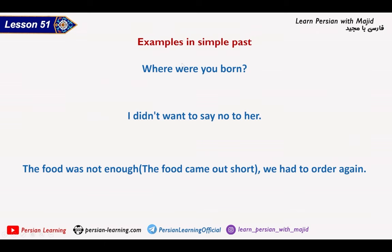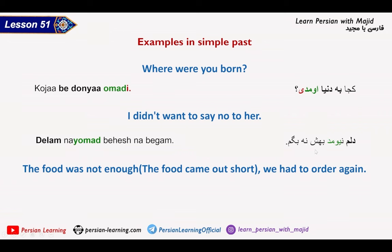Let's have examples in simple past tense. Where were you born? کجا به دنیا اومدی — BE DUNYA AAMADAN means to come to the world, i.e., to be born. I didn't want to say no to her — دلم نیومد. My heart didn't let me do that.